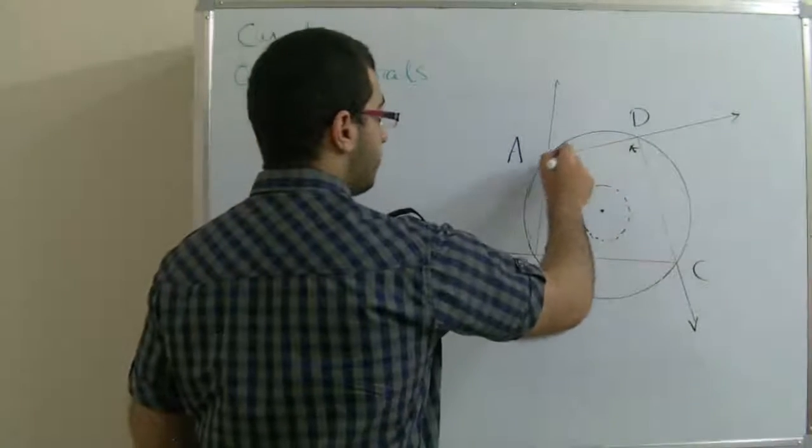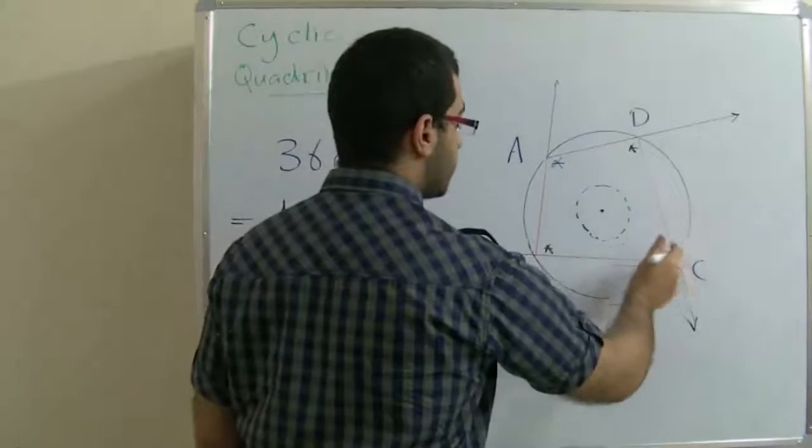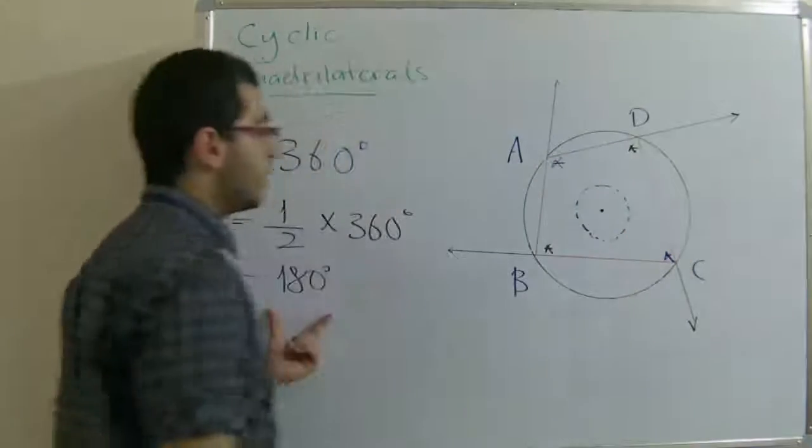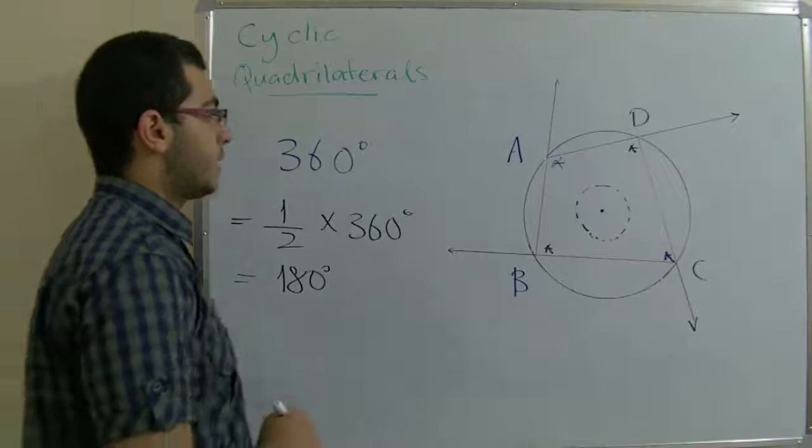Also, measure angle A and measure angle C sum together equals 180 degrees. This is the first thing.